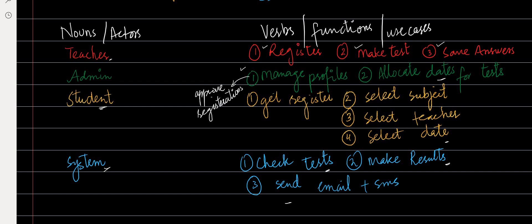Whenever teachers and students get registered they will also have an option to manage their profile. Now here I want you to understand one very simple thing — you are not supposed to inspect the system in terms of how good or bad it could be, what things could be added or removed. You are just going to see what is given in this case study and solve that. Don't add anything from your own ideas about how the system could work. Just write down the necessary things — the bare minimum of what is required.